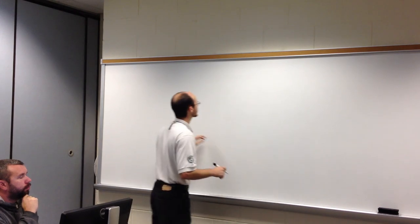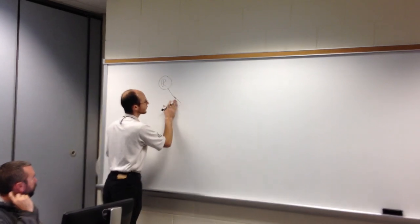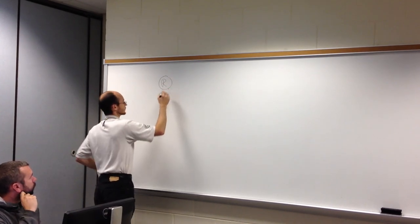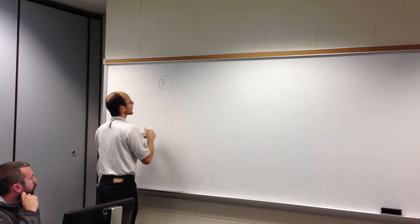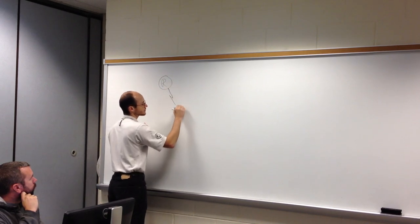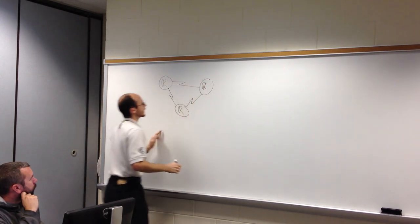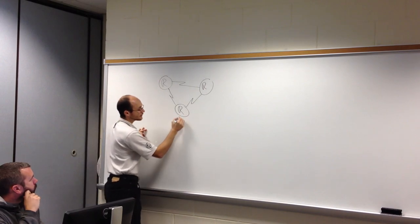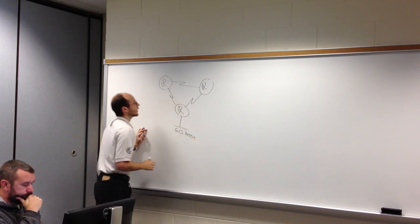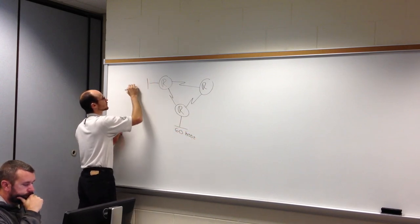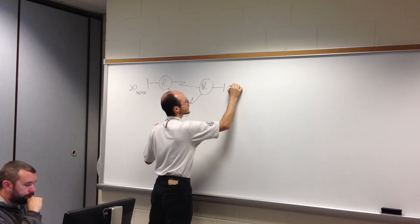In the handout I passed out, I have a logical topology of a router connected to another router using a serial connection — we usually call this a point-to-point connection. This connects to another router, and then we connect these back together for redundancy. Off of this router is a private network of 60 hosts, then 20 hosts on another network, and 14 hosts on another.